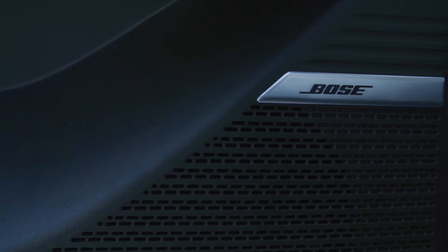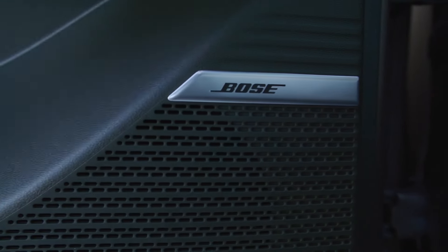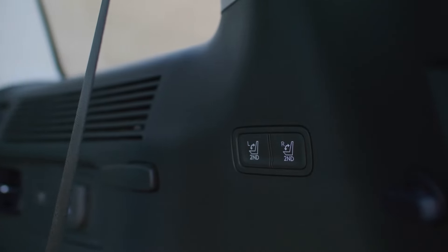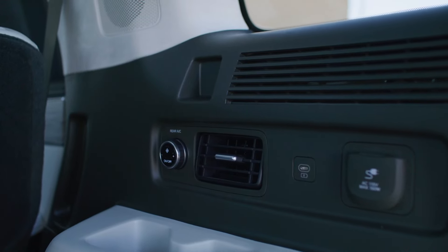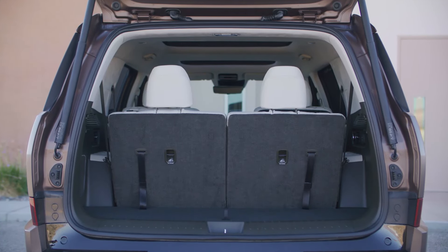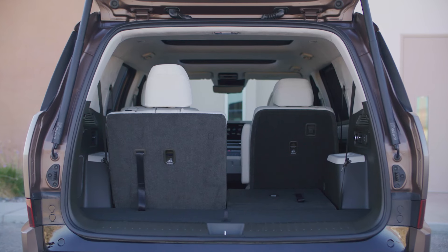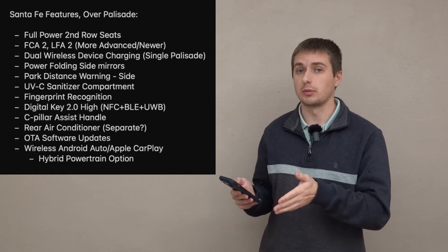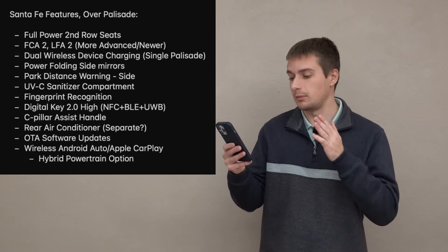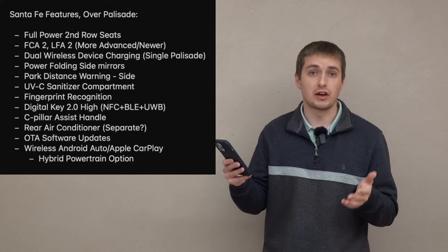Digital Key 2.0 Hi version, which is NFC, Bluetooth low energy, as well as ultra wideband, C-pillar assist handles, rear air conditioner. Again, not sure if this is a dedicated secondary air conditioner for the vehicle or just the rear air conditioner controls. If it is just the controls, you also get that in the Palisade. But if it is another air conditioning system, that is not found in the Palisade to my knowledge. You get over the air software updates for the map infotainment, as well as some of the other modules inside the vehicle where it's only for the map on the Palisade. And finally, you do get the wireless Android Auto and Apple CarPlay for the infotainment system.